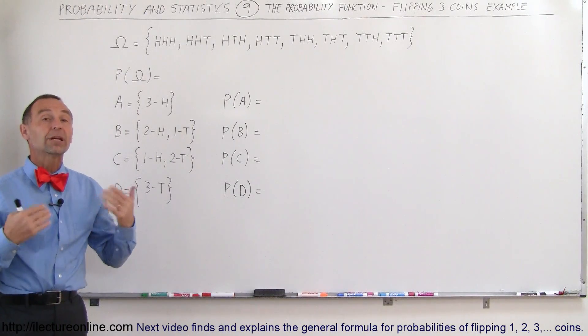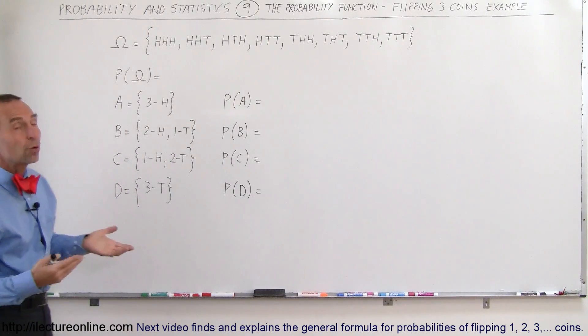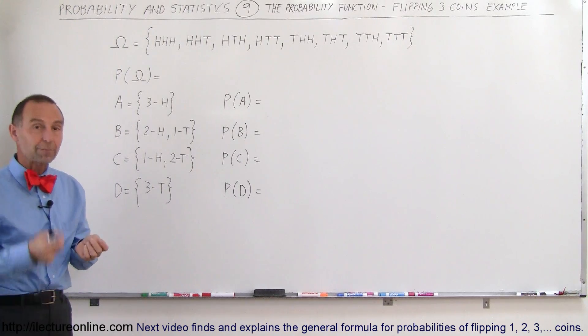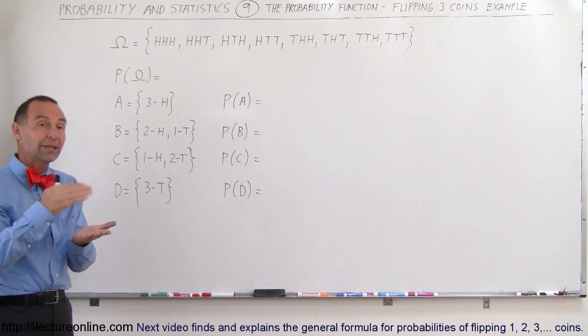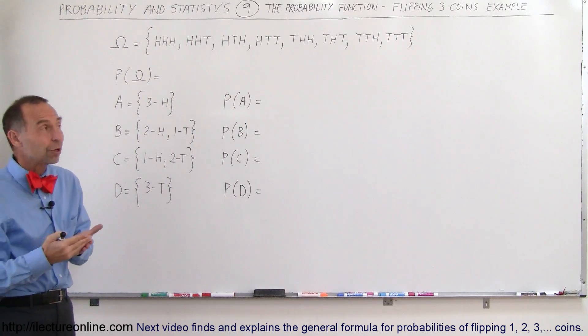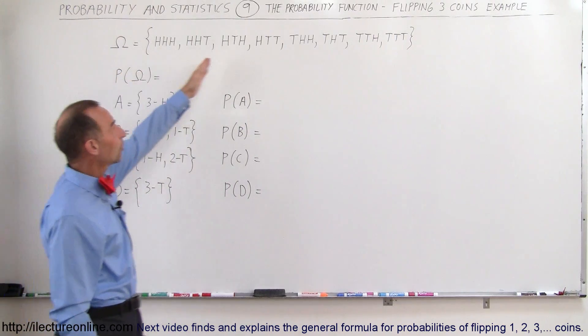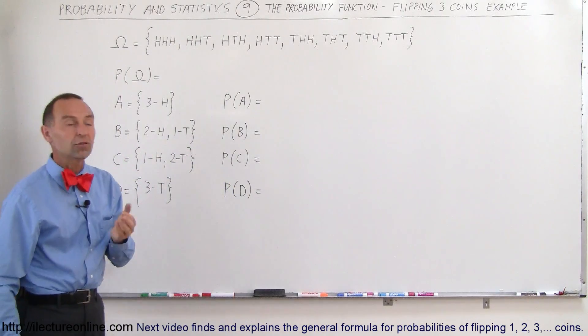Welcome to LectureOnline. Now we're going to do an example with flipping three coins. Let's say we have three coins and we flip them independently. How can the three coins end up? They can end up with heads or tails, and when you have three of them, these are the eight possible outcomes that you can have, eight possible results.